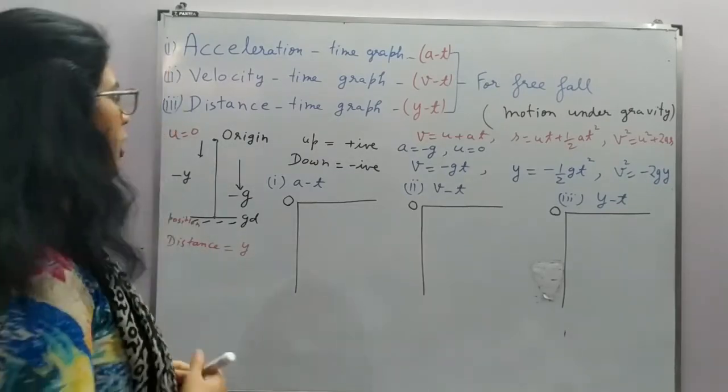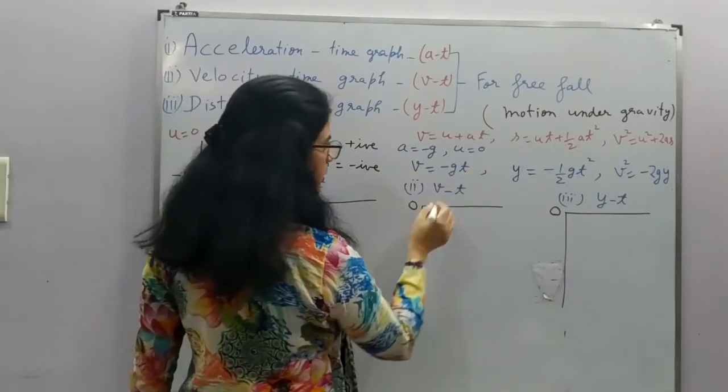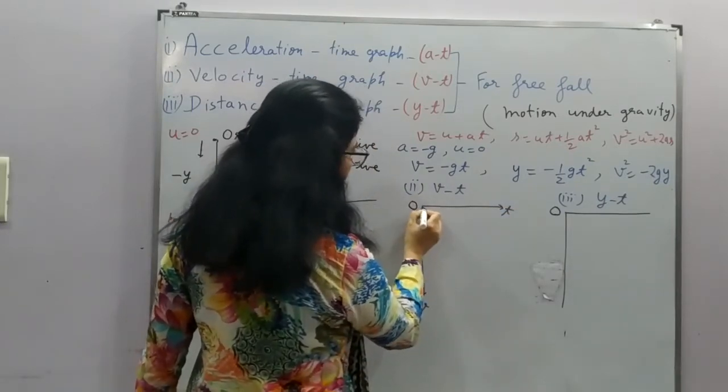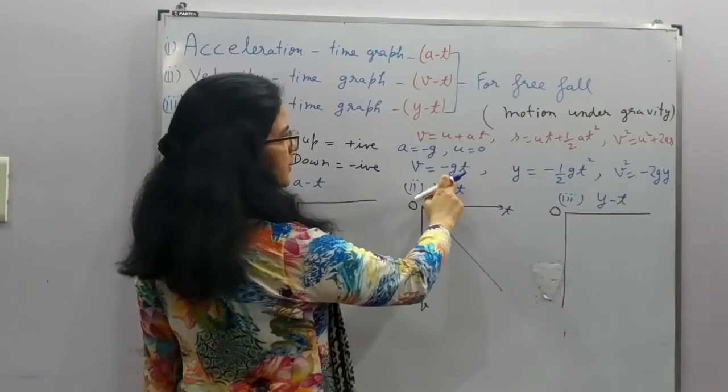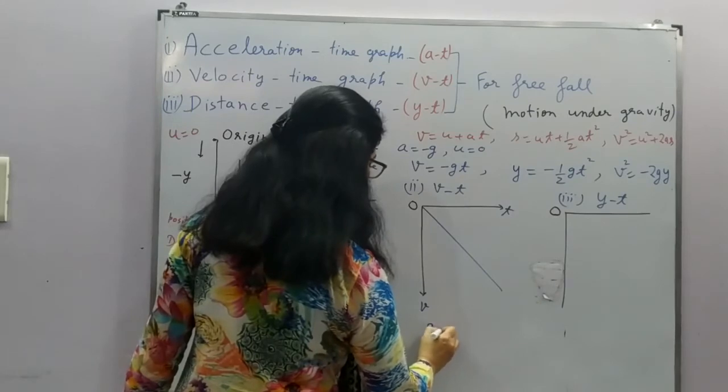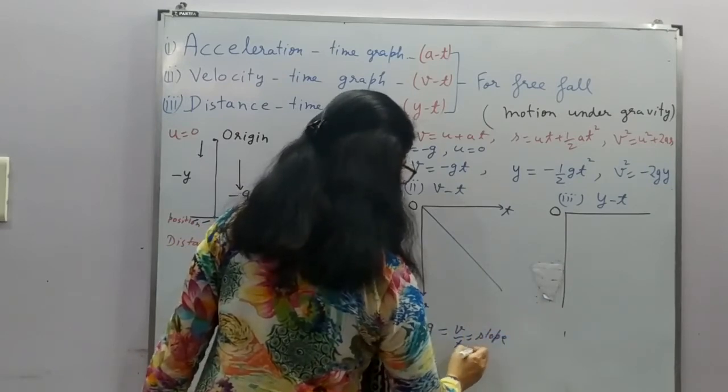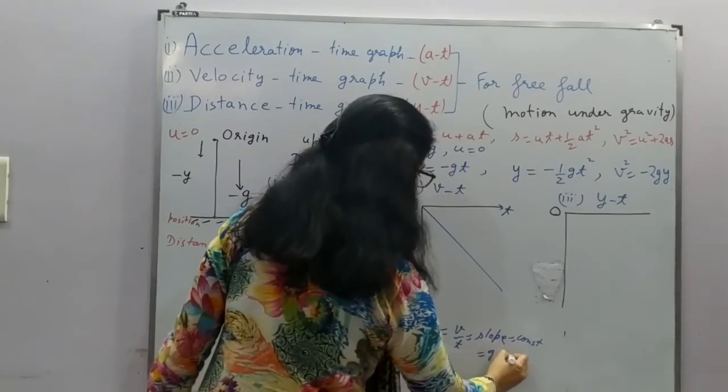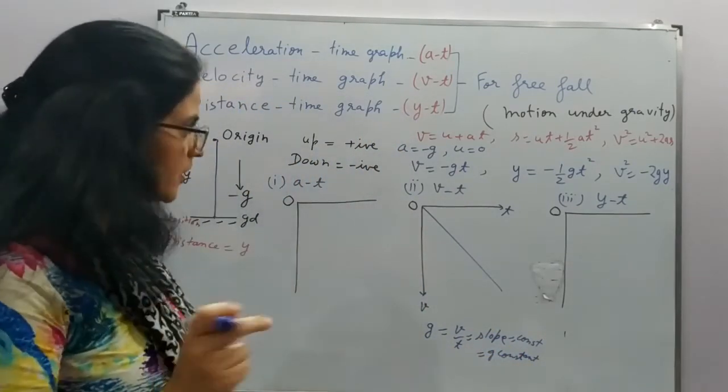So I hope this is clear. Here, now we know that from this equation, we can draw the graph for velocity. Velocity is directly proportional to time. If this is the time axis, this is the velocity axis, then I can say that this is the graph for velocity. Now from here, we know that the acceleration is V upon T. Acceleration is given by the slope. So G, magnitude of g, is V upon T, that is slope. This is constant. So therefore, G is constant for places near the earth.